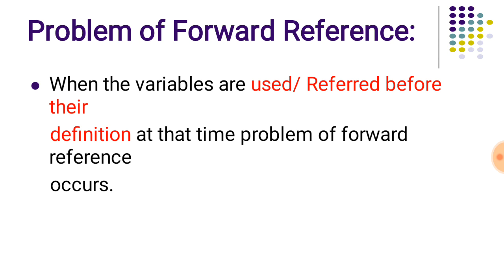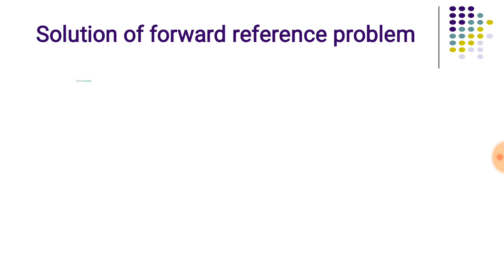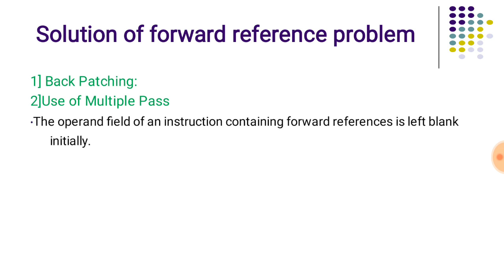When variables are used or referred to before their definition, that situation is referred to as the forward reference problem. In this example, we have three symbols X, 1, and 10 which are referred to at location counter values 100, 101, and 102, but the assembler cannot generate their addresses as they are defined later at addresses 104, 105, and 106. This situation is reported as a forward reference problem, which can be tackled by two solutions: back patching and the use of multiple passes.